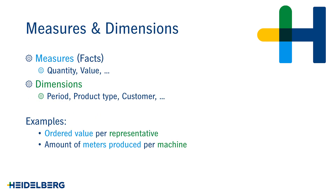Let's begin by defining the terms measures and dimensions. In Power BI, we have two different types of data. Measures are numerical, such as quantities and values. As a rule of thumb, if you can ask what the total value or average value of the data is, the data will be a measure. As an example, the total value of sales, or the average value of shipments delivered on time — these are therefore both measures.